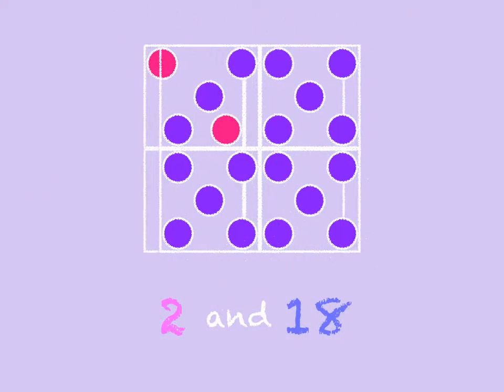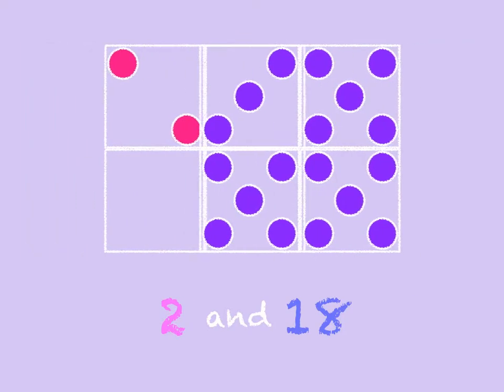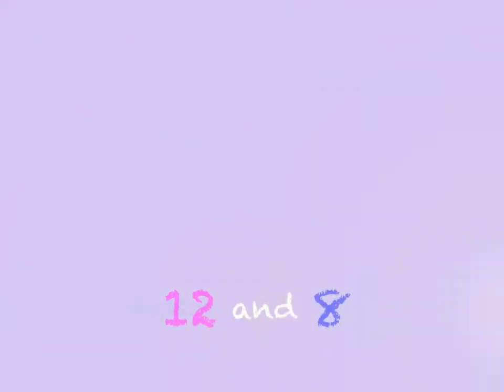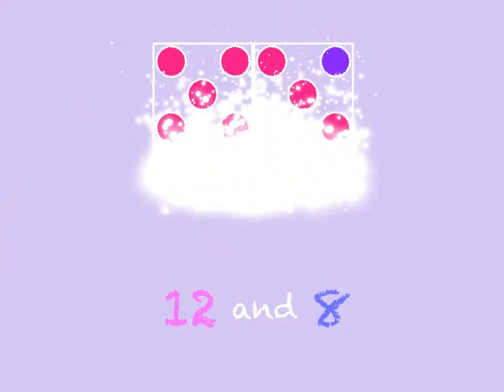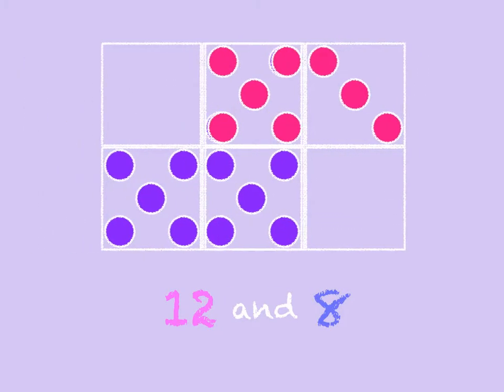Two and eighteen. Two and eighteen make 20. Twelve and eight. Twelve and eight make 20.